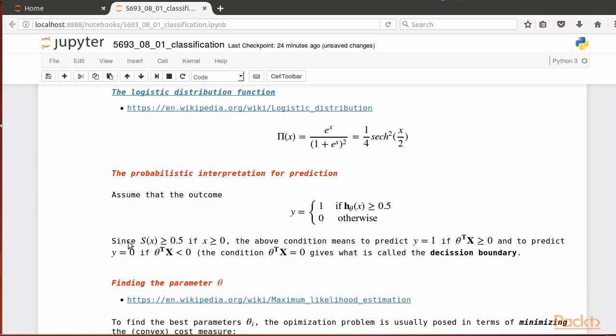Given x and the parameter theta, 1 minus h of theta of x is equal to the probability of obtaining y equals 0, given x and the parameter theta.